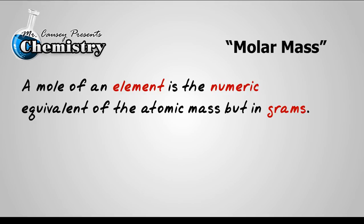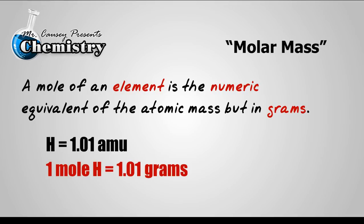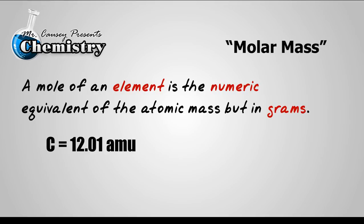So hydrogen is 1.01 atomic mass units. One mole of hydrogen is 1.01 grams. Or carbon is 12.01 atomic mass units. And one mole of carbon is 12.01 grams. The mole of an element is the numeric equivalent of the atomic mass in grams.